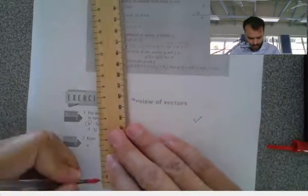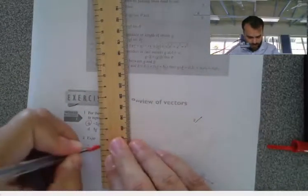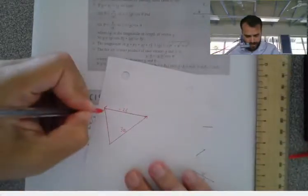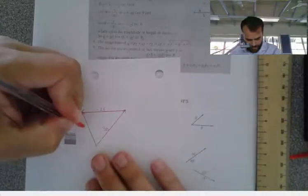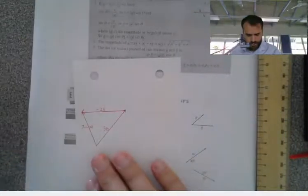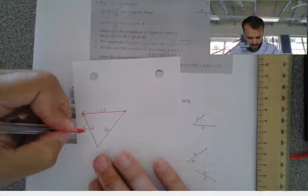And then do our vector from the first tip to the last, or first tail to the last tip. So that's 3A minus 2B. There's our graphical of that one.